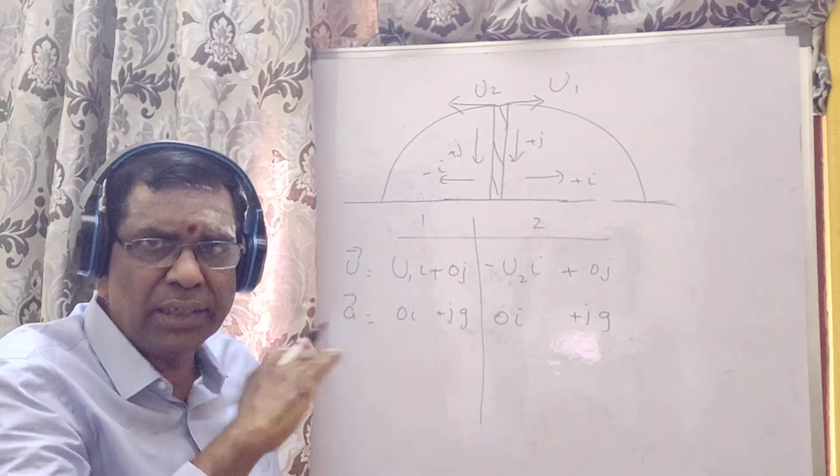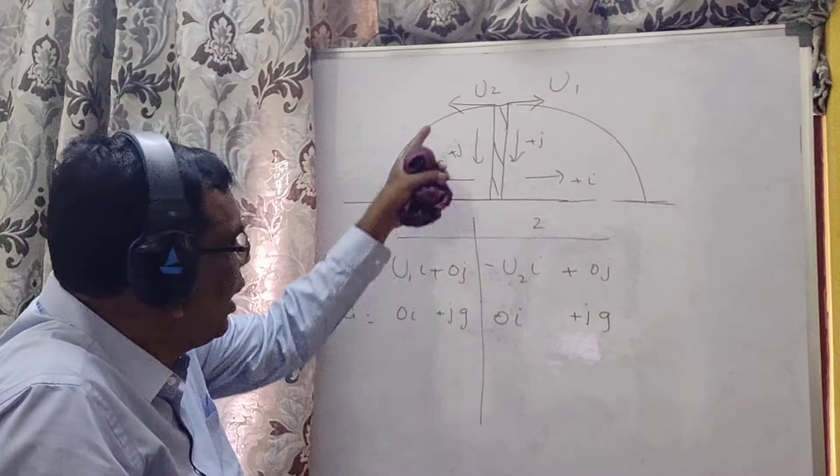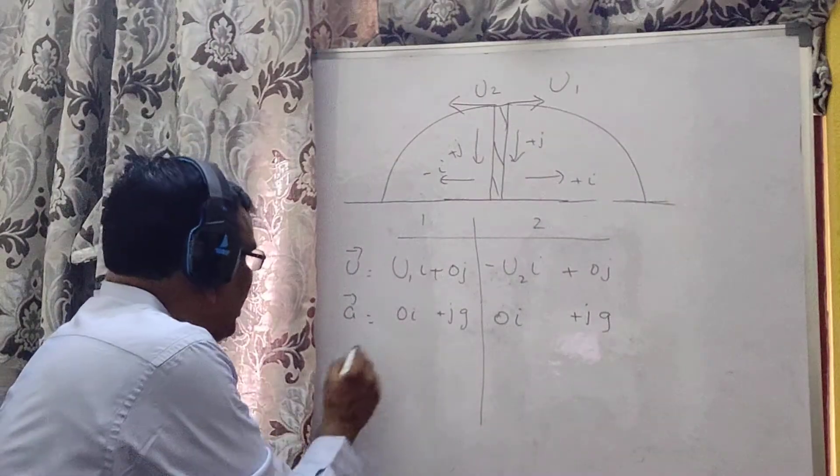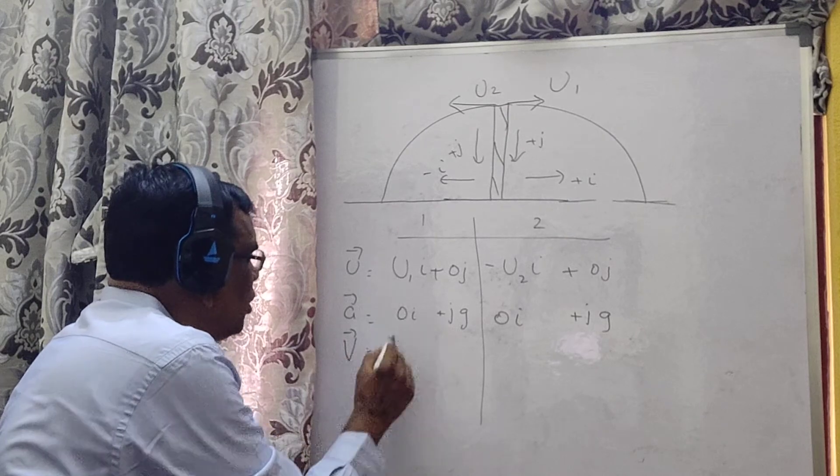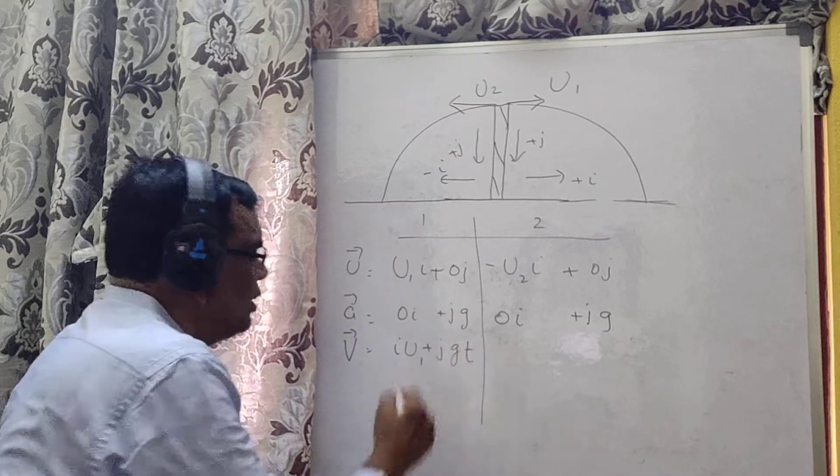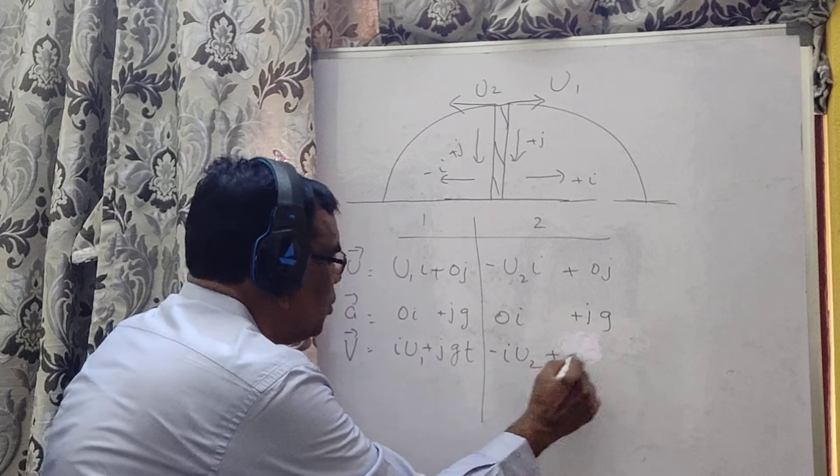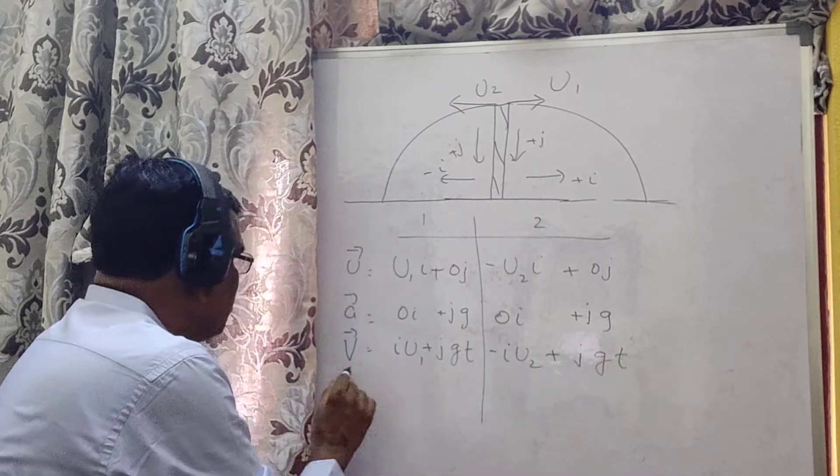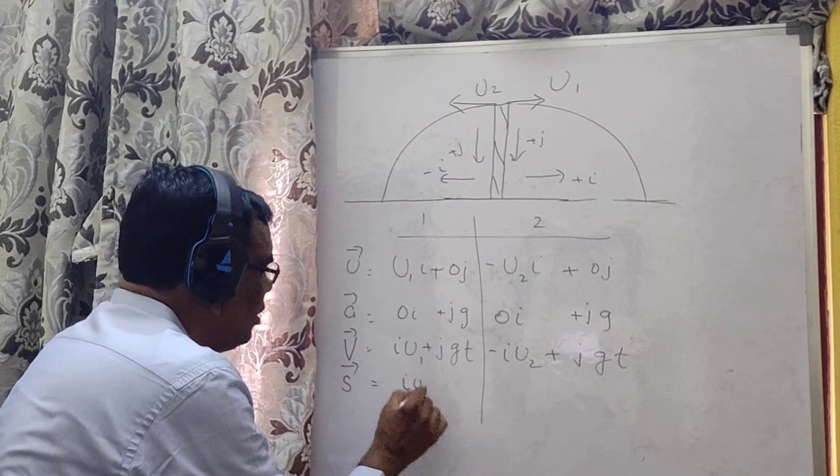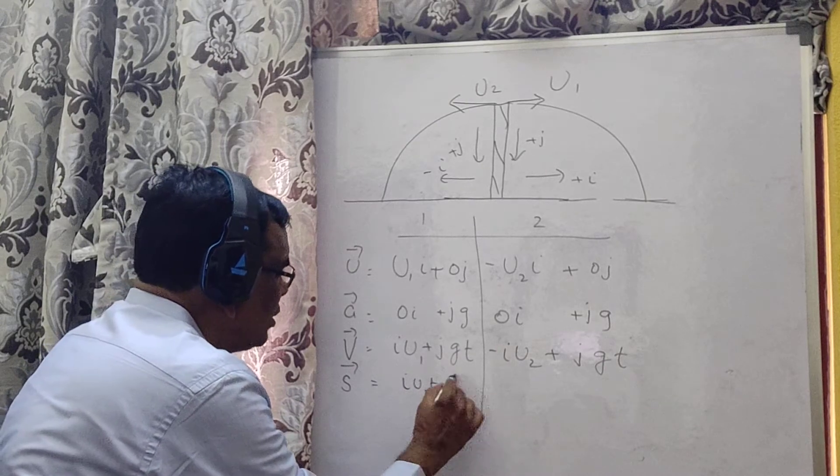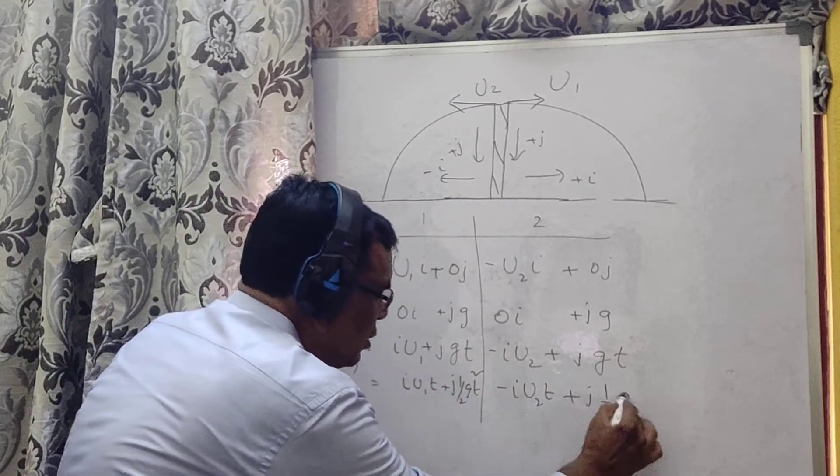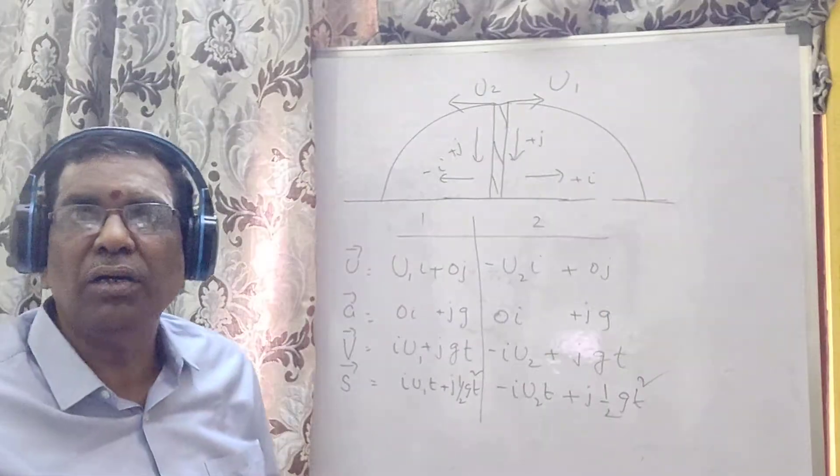So, there is no acceleration in the horizontal direction. Acceleration is only in the vertical direction. Now write down the equations which I already wrote in the previous case. So, v bar is equal to iu1 plus jgt and this is minus iu2 plus jgt. And similarly, s bar is iu1t plus j...